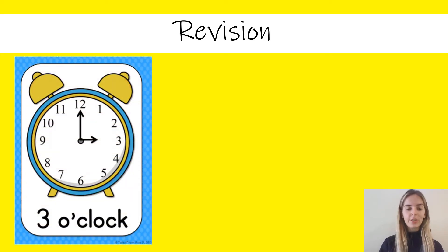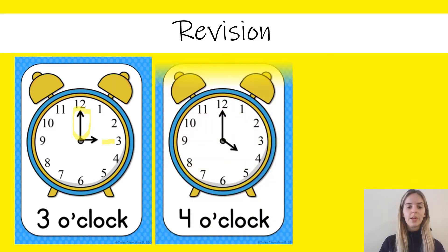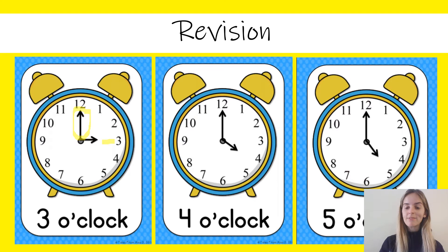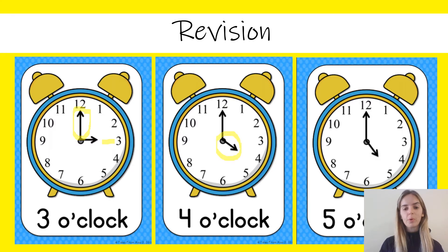Here we have three o'clock. Our hour hand is pointing to the three, and our minute hand, our long hand, is on the twelve. Then we have four o'clock and five o'clock. To help us read the time we can look at the short hand and see where it's pointing. I can see here that it is pointing to the four, and over here it is pointing to the five.